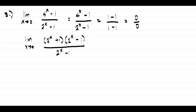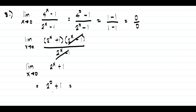We can cancel the factor 2 raised to x minus 1 from the numerator and denominator, leaving the limit of 2 raised to x plus 1 as x approaches 0. Substituting x equals 0 gives us 2 raised to 0 plus 1, which is 1 plus 1, and that is 2. So 2 is our answer.